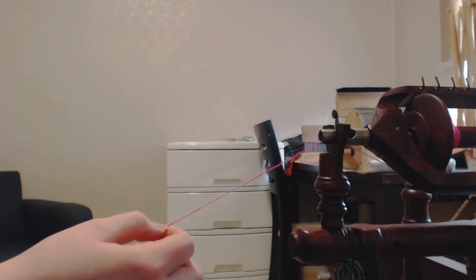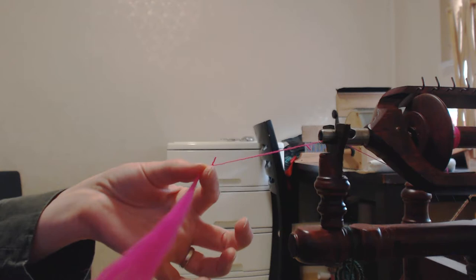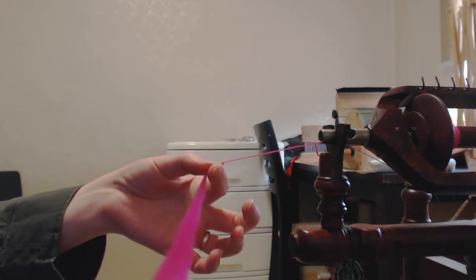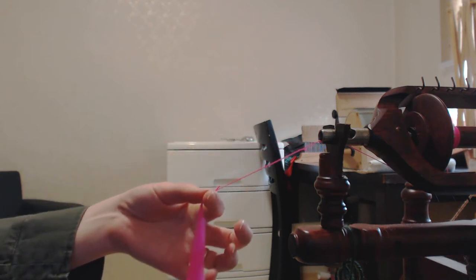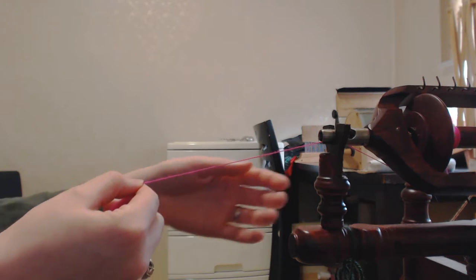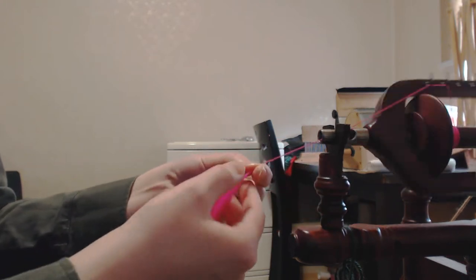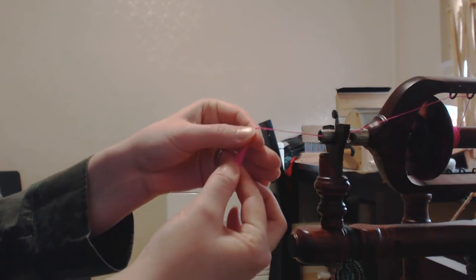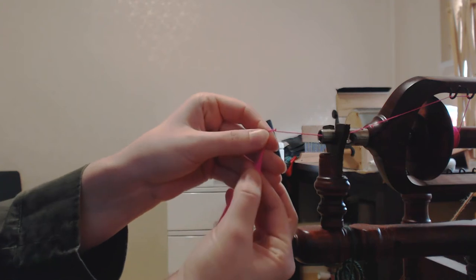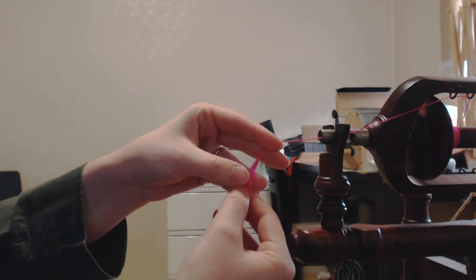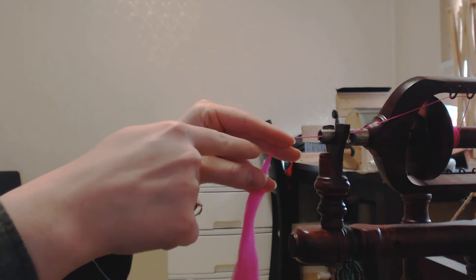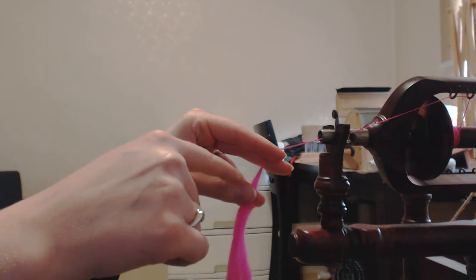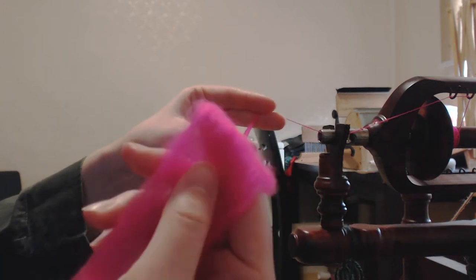Now I wanted to offer a quick note about the way that I spin. I do kind of a reverse American forward short draw. Now this is what it should look like if I was doing that. So I have my drafting triangle here.